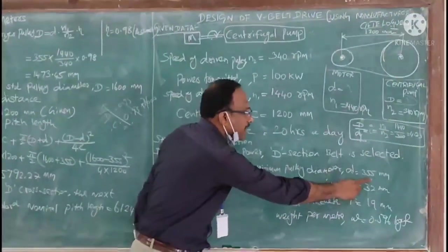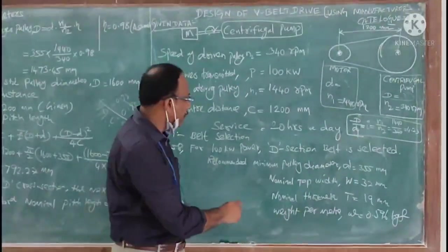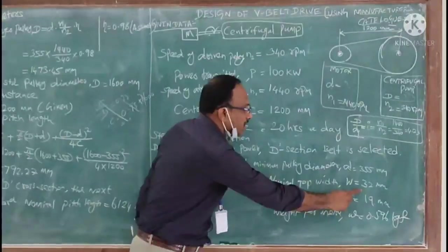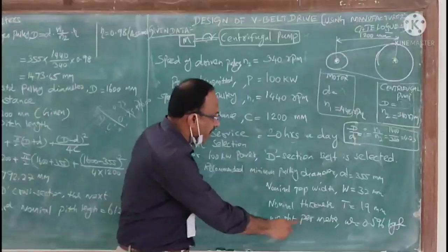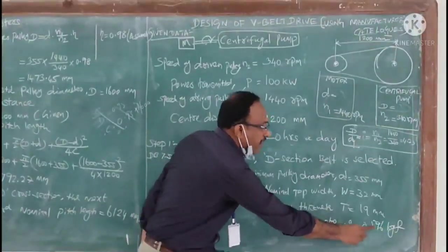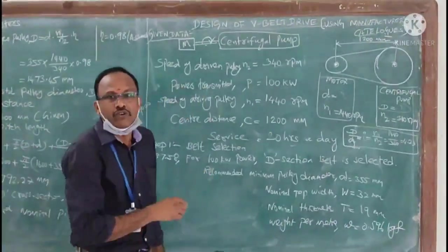Recommended for this particular belt, we make note of all these four parameters: minimum pulley diameter is 355 millimeter, nominal top width is 32 millimeter, nominal thickness is 19 millimeter, and weight per meter is 0.596 kilogram force.